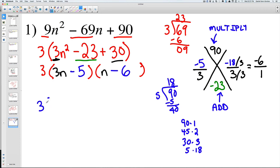So your final answer is going to be 3 times (3n - 5) times (n - 6), and that is your final answer.